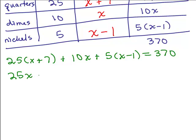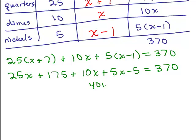You can put this on pause and work on your own first. So we have 25X, I'm going to do the distributive property, plus 175 plus 10X, distributive property again, gives you 5X minus 5 equals 370. Now I need to add the like terms on the left. So I have 25X plus 10X plus 5X. That's going to give you 40X and I've also got the 175 minus 5. That's plus 170.